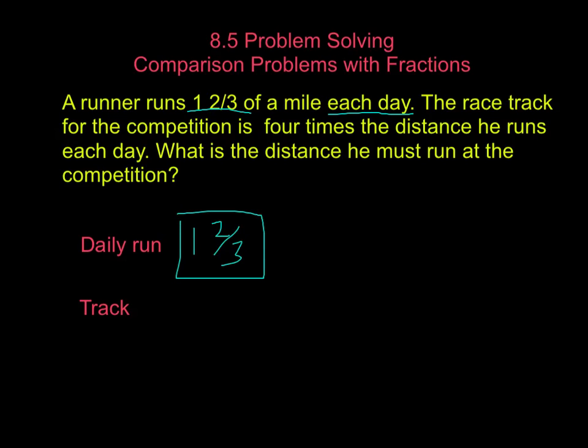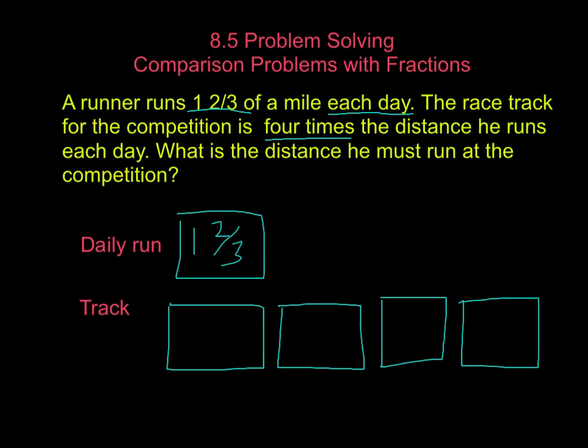Now the track, it says, is four times the distance. So we're going to have four times the distance that he normally runs. By setting it up as a model like this, it's easier to see what we're doing.